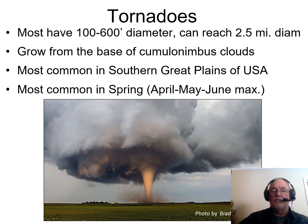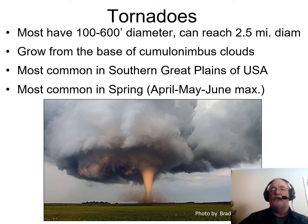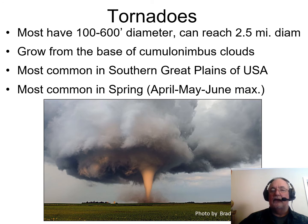Tornadoes mostly have a diameter of a few hundred feet, but can be as wide as two to two-and-a-half miles. They always grow from the base of a cumulonimbus cloud, always have a mesocyclone or tight circulation, and must have ground disturbance. They are most common throughout the world in the Southern Great Plains of the United States — the area just east of the Rocky Mountains, particularly Texas and Oklahoma. The most common time is spring: April, May, June.